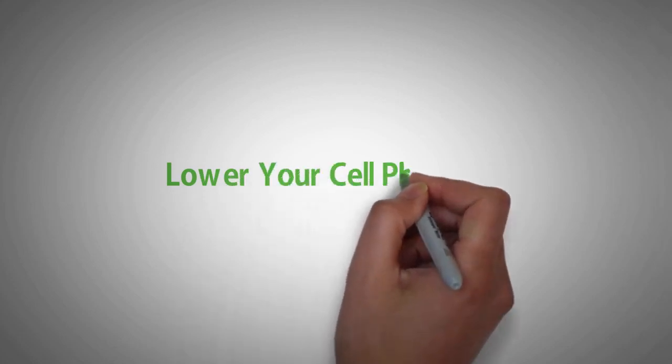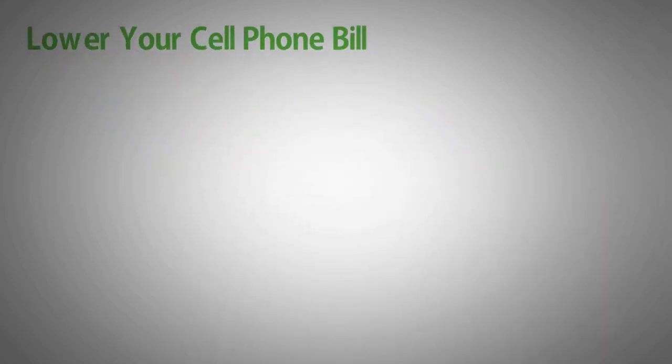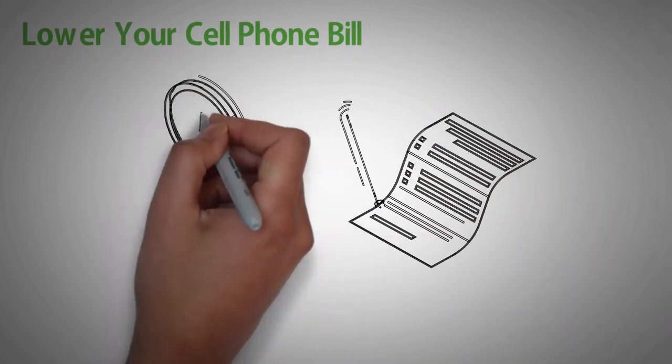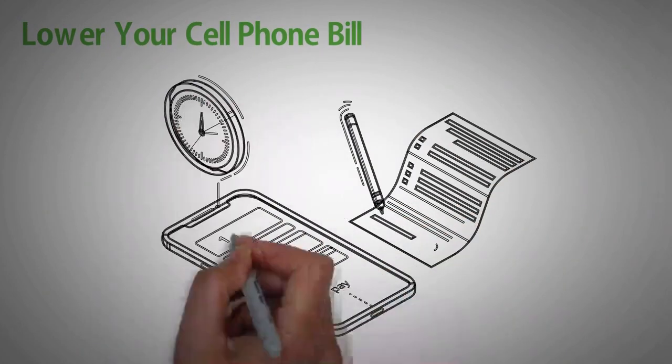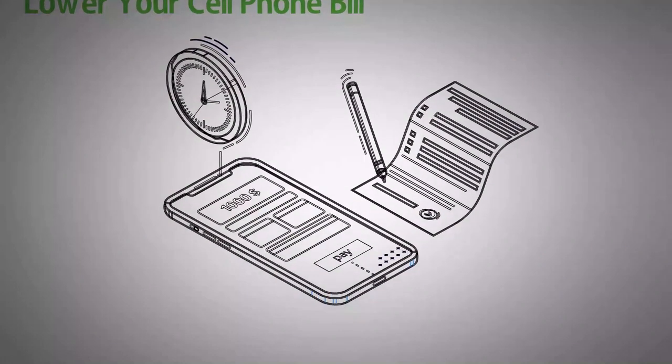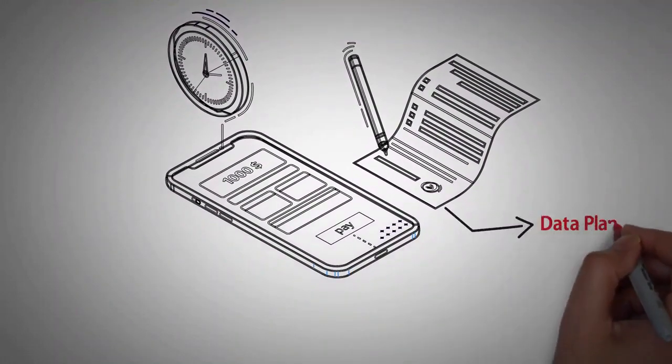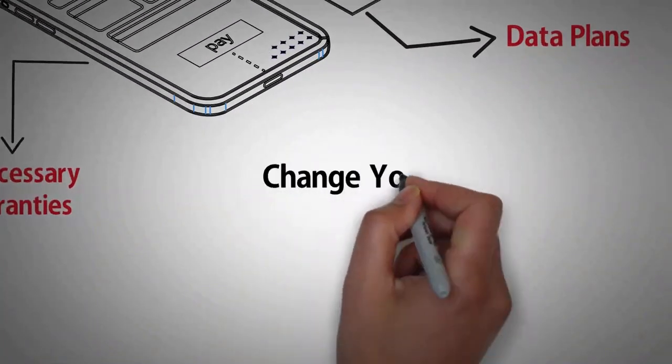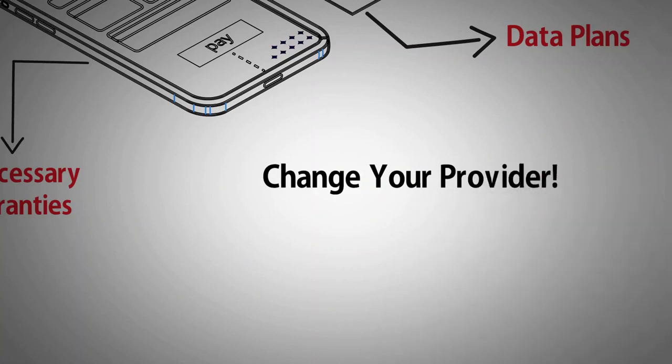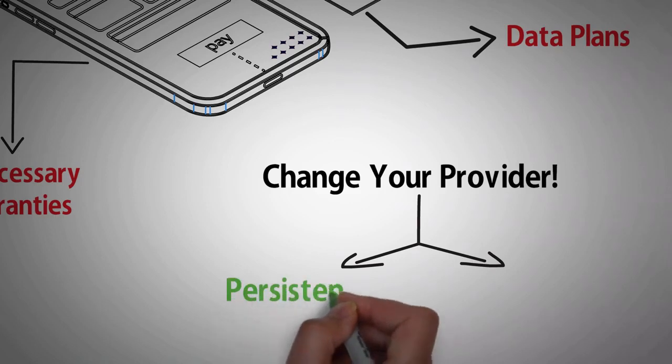Lower your cell phone bill. If your monthly cell phone bill competes with your monthly grocery budget, it's time to find ways to cut back. Save money on your cell service by getting rid of extras like costly data plans, phone insurance and unnecessary warranties. And don't be afraid to haggle with or completely switch your provider. It might require a little persistence and research, but the savings are worth it.